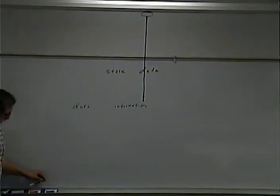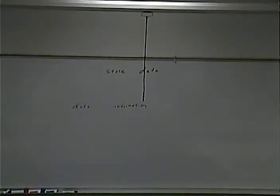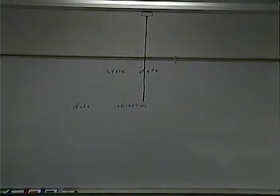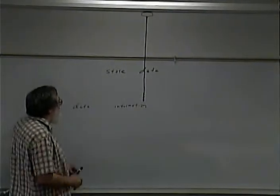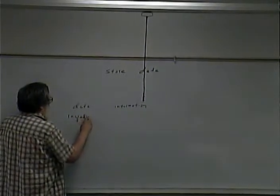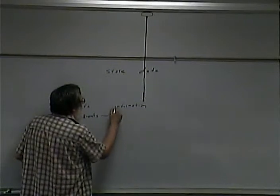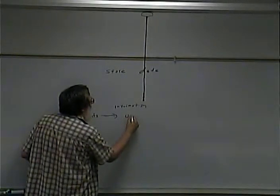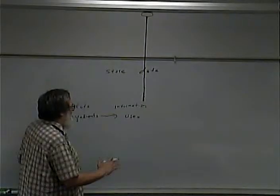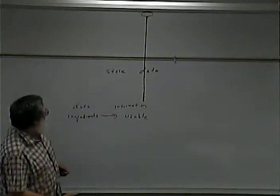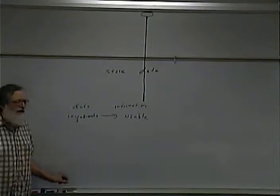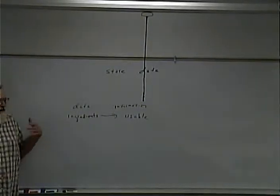If an IT person says data versus information, what do you think the difference means? Data is a piece of information — I kind of like that as a start. Data is what you collect from users, and information is what you retrieve from the data. Think of data as being ingredients and information being something useful.